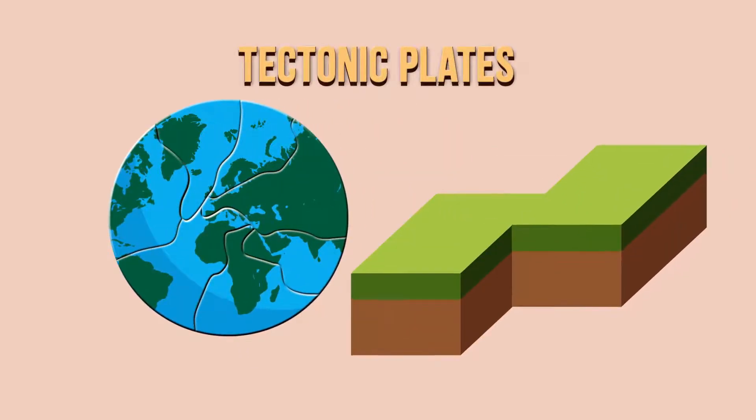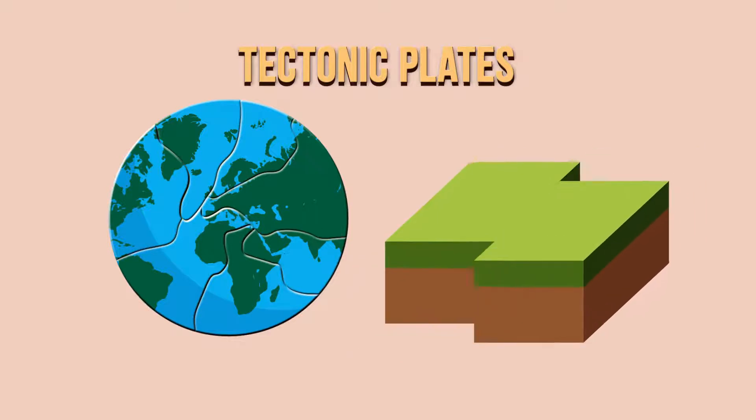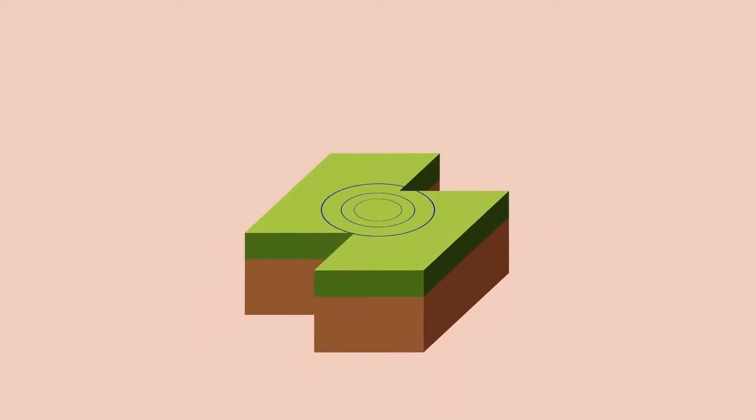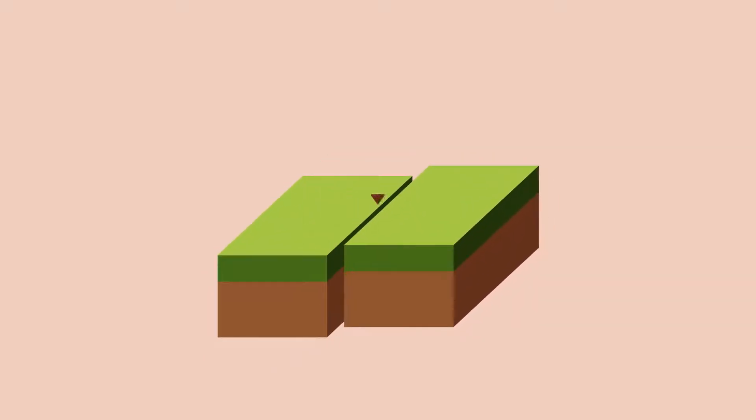Tectonic plates are constantly shifting as they drift around on the viscous and slowly flowing mantle layer below. This non-stop movement causes stress on Earth's crust. When this stress is significantly higher, it can cause the rocks to break, resulting in cracks or faults on Earth's surface.